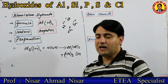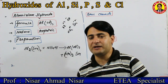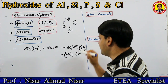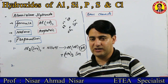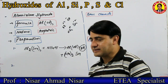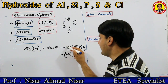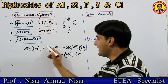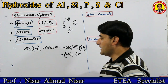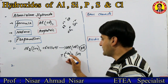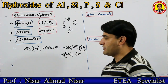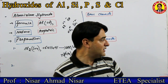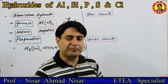جب ہم aluminium salt میں alkali — وہ base جو water میں dissolve ہوتی ہے — ملائیں تو ہمارے پاس aluminium hydroxide precipitate کی form میں حاصل ہوتا ہے۔ اب reaction کو balance کرنے کے لیے — aluminium 2 ہے یہاں پہ — 2 لگا دیں۔ Hydroxide 6 ہو جائے گا تو یہاں 6 لگا دیں، aluminium 6 ہو جائے تو یہاں 3 لگا دیں — equation perfectly balanced ہو گی۔